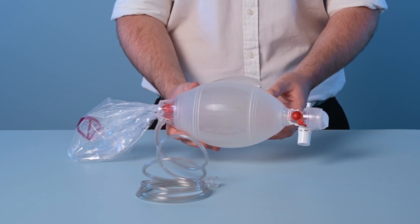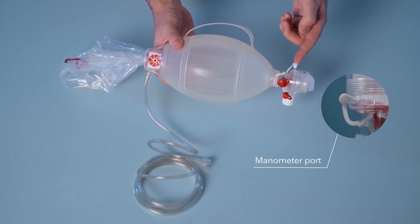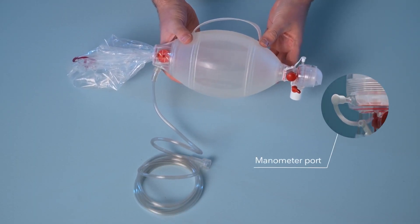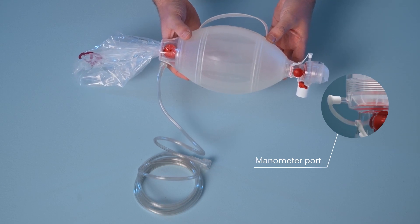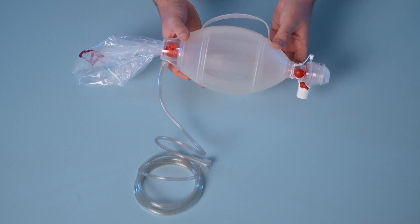Located above the patient connector is the manometer port, and this allows for the Ambu disposable pressure manometer to be connected to the Spur2 for the purposes of pressure monitoring.